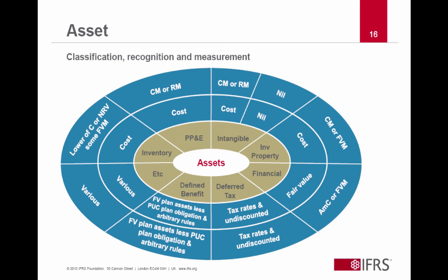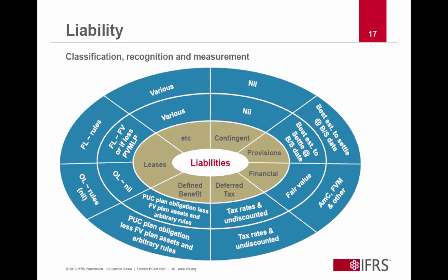This slide does the same exercise for liabilities. Again, the first thing you have to do is take the liability and classify it. Once you've classified what type of liability it is, the second circle tells you what the initial measurement is, which depends on the classification. And then the outer circle is subsequent measurement, which also depends on the classification. As you can see from these two slides, we have a wide variety of types of measures in financial statements today, which makes it difficult for users of financial statements and also makes it difficult for students to understand how to think about IFRS.